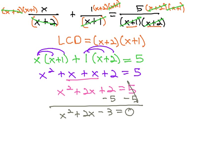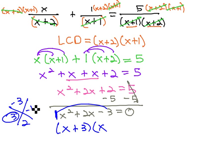Now that it's equal to 0, we can factor it using the AC method, multiplying to negative 3 and adding to 2. This is going to be 3 and negative 1. Because we have a 1 in front of the x squared, we're allowed to use our shortcut to factor to x plus 3 times x minus 1.